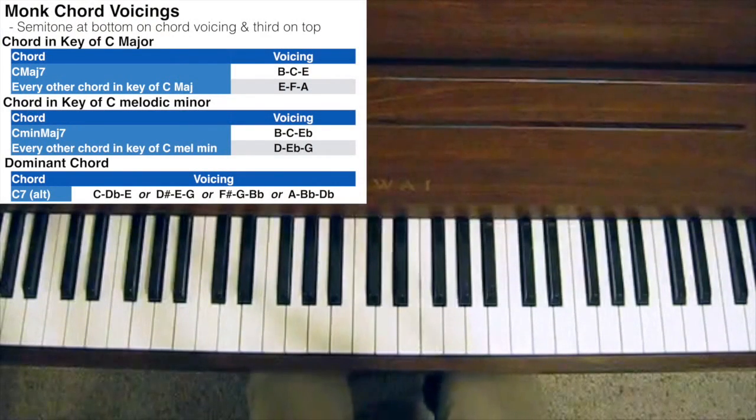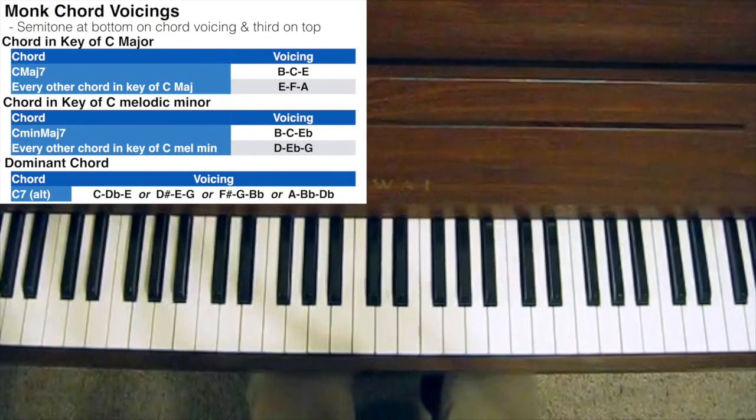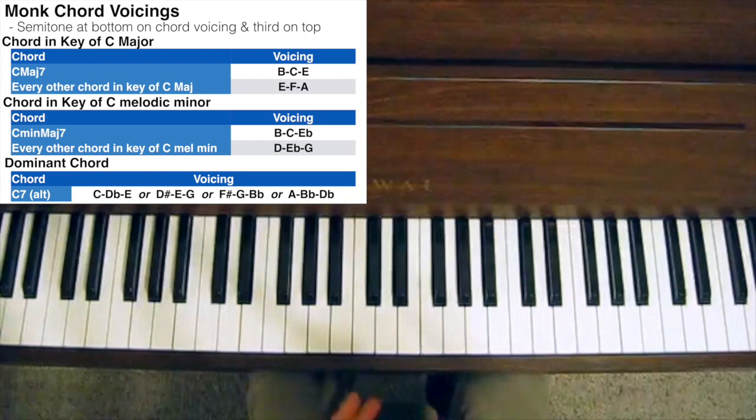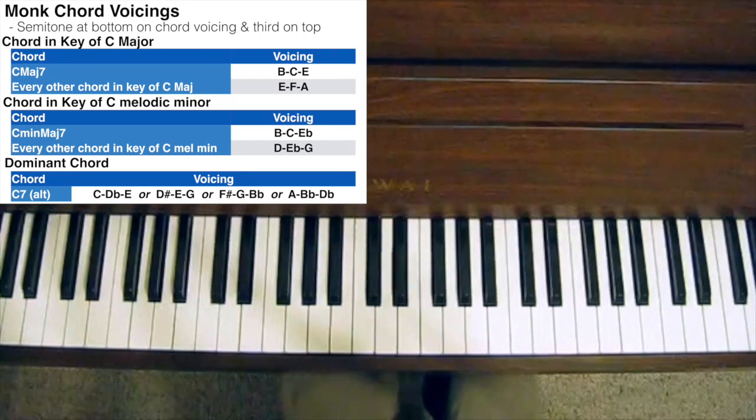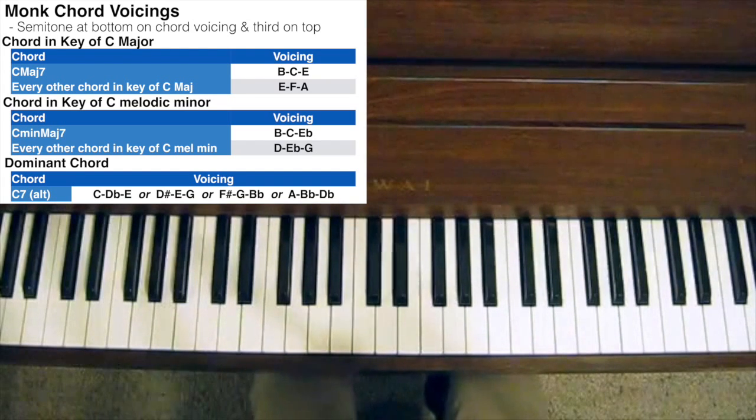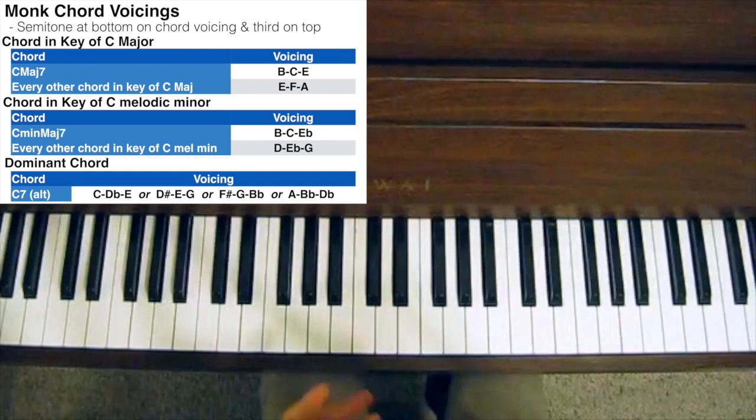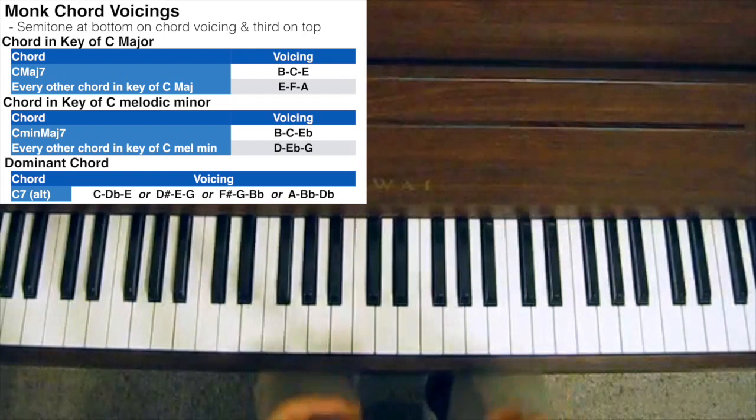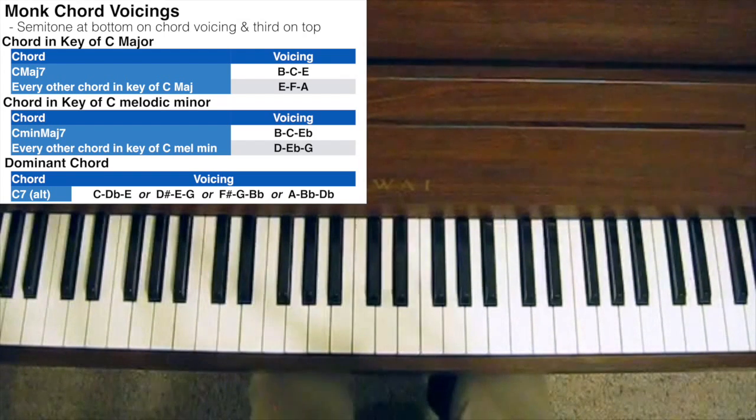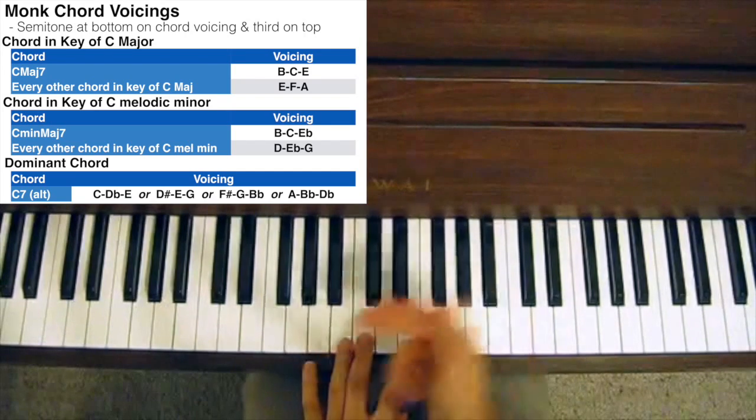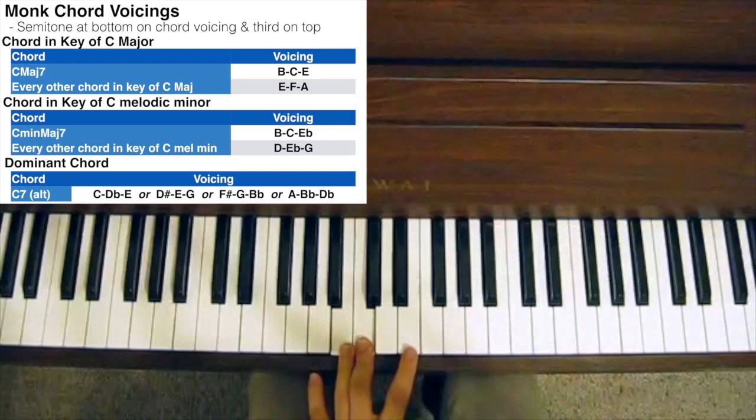Hi guys. Today we're going to talk about Thelonious Monk chord voicings. Thelonious Monk was a pretty interesting, unique, and amazing jazz pianist who was known for his really dissonant and jarring harmonies. He would often play relatively simple chord voicings but ones that had a bit of bite and sounded quite dissonant. The way he would do that was to have a semitone interval at the bottom of the chord voicing and then a third on top.